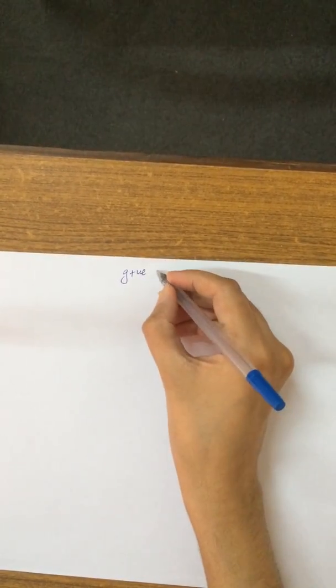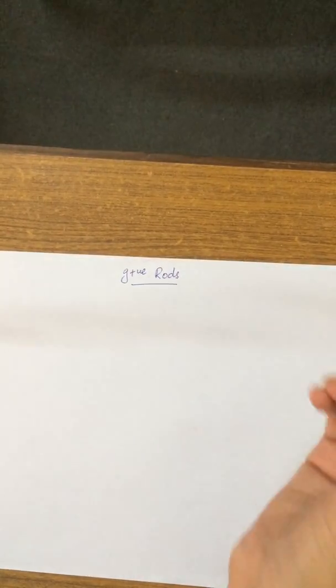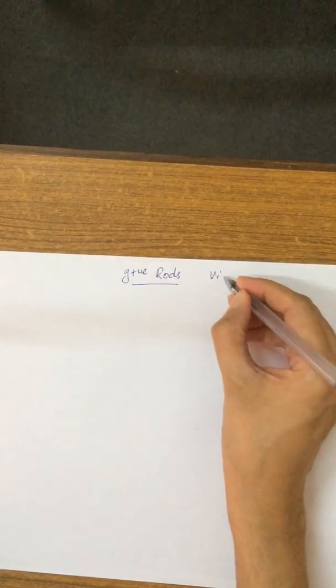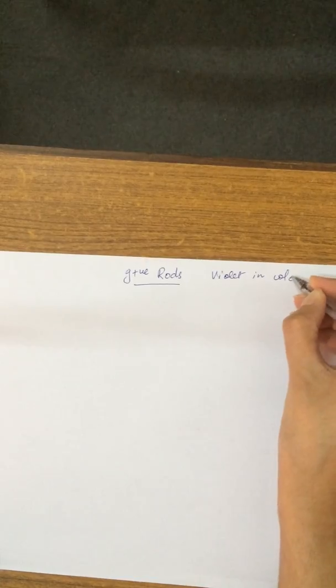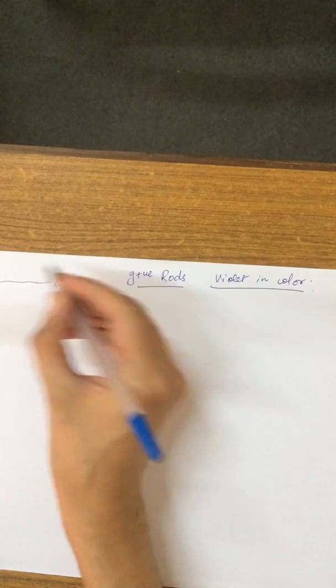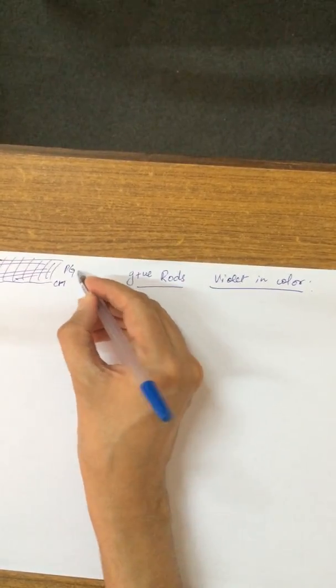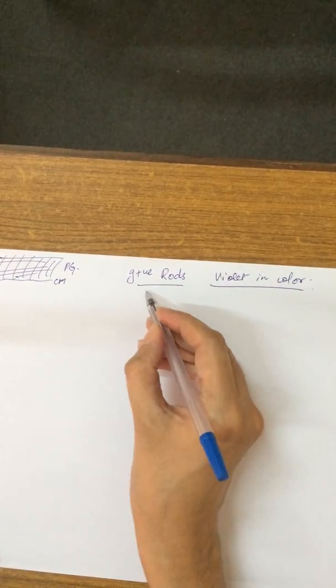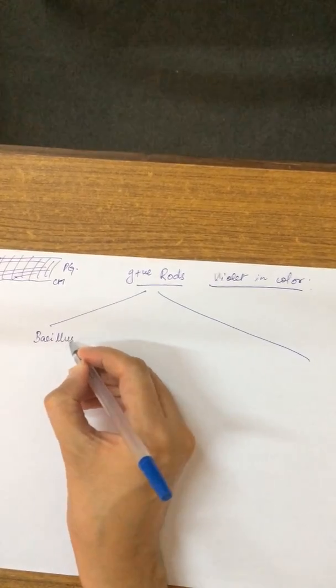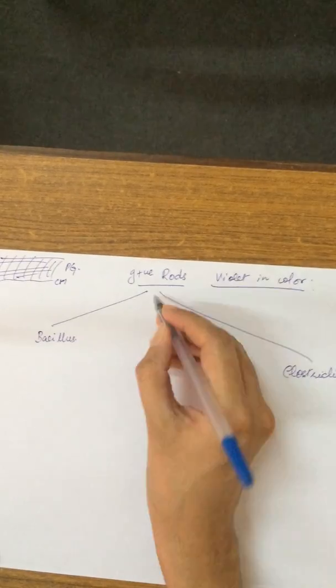To revise gram-positive rods quickly, first remember they are gram-positive, so they are violet in color. We have the basic configuration with a cell membrane and a very thick peptidoglycan layer. Gram-positive rods have two big groups: Bacillus and Clostridium.